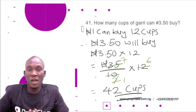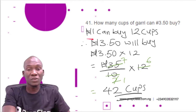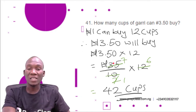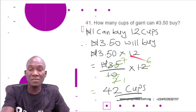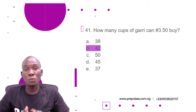Using the information from the graph, one Naira can buy 12 cups of Garri. So, 3 Naira 50 kobo will buy 3.50 times 12. We convert 3.50 to a fraction: that is 35 over 10 times 12. Dividing, 5 into 10 is 2, 5 into 35 is 7, then 2 into 12 is 6. So 7 times 6 gives us 42. This means 3 Naira 50 kobo will get 42 cups of Garri, and the correct option is option B: 42.